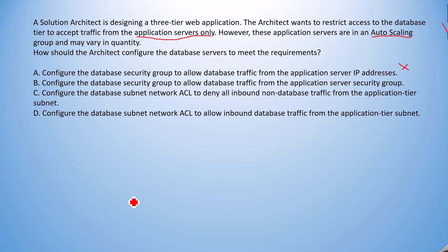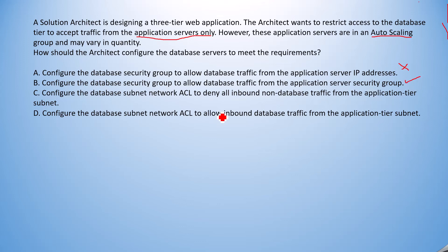The next option says: configure the database security group to allow database traffic from the application server security group. Yes, we can configure the database security group to allow the application server security group — automatically everything else will be denied, and we have no need to maintain private IP addresses. This is the best fit, because when auto scaling launches new instances, the security groups remain the same. I'll go with this as the correct answer.